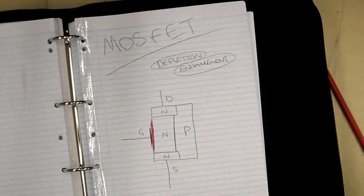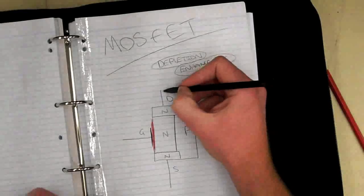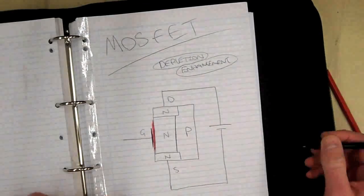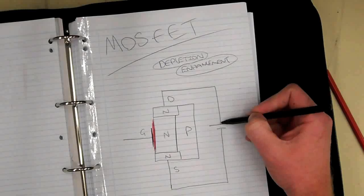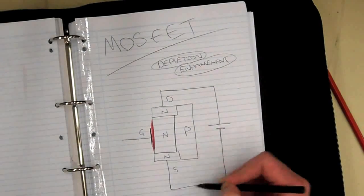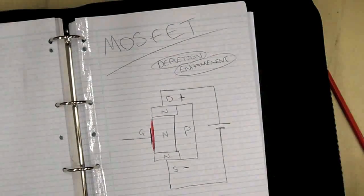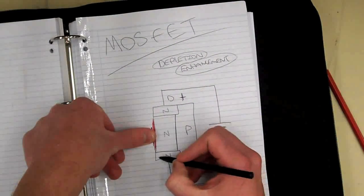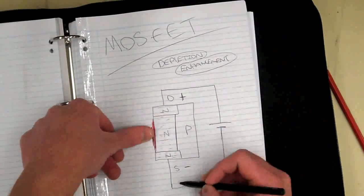Let's first operate it like a JFET. A JFET only operates by squeezing off the channel — or you could say it depletes the channel. With an N-channel MOSFET, we have the drain connected to the positive end of our supply, and the source is more negative, so the drain is more positive with respect to the source. Without anything connected to the gate — just leave it open circuit — we will get current flow. All of the electrons in the channel will flow from negative to positive.